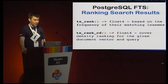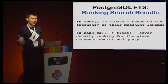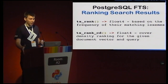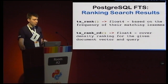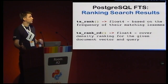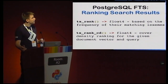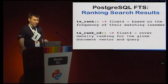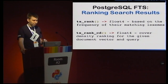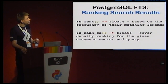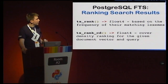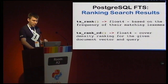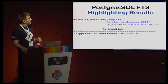Next, an important topic: ranking search results — how to measure how relevant documents are to a particular query. When there are many matches, the most relevant ones should be shown first. Postgres provides two C-based functions: ts_rank and ts_rank_cd (cover density). You can use them to rank your results.